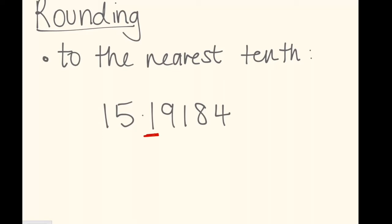So how do we round off to a tenth? Well, we look at the number next to the one, next door to the one. You could highlight that. And that number is a nine. So you remember how to round numbers. If it's five or more, you add one more. If it's four or less, you let it rest.